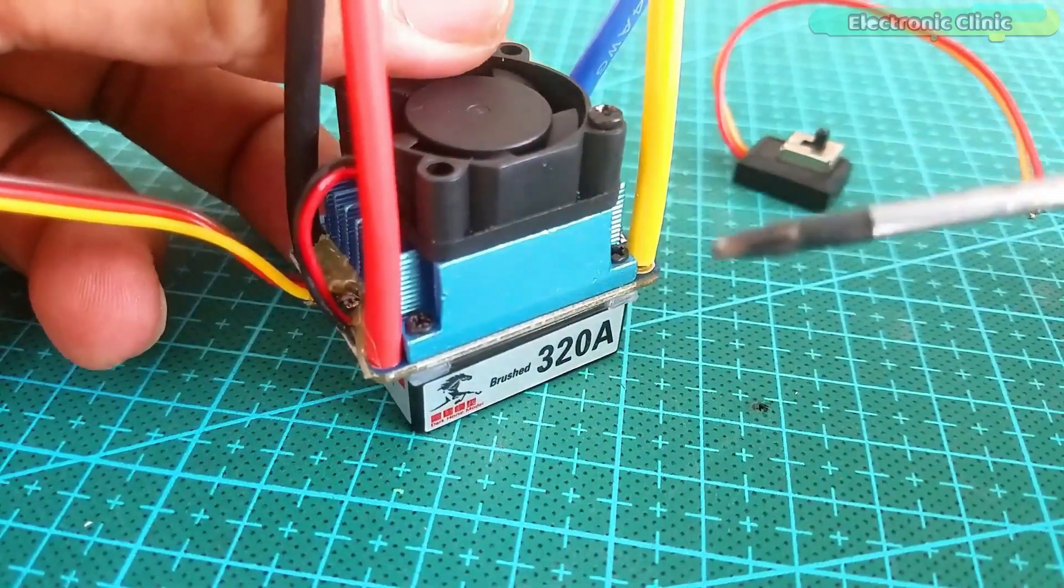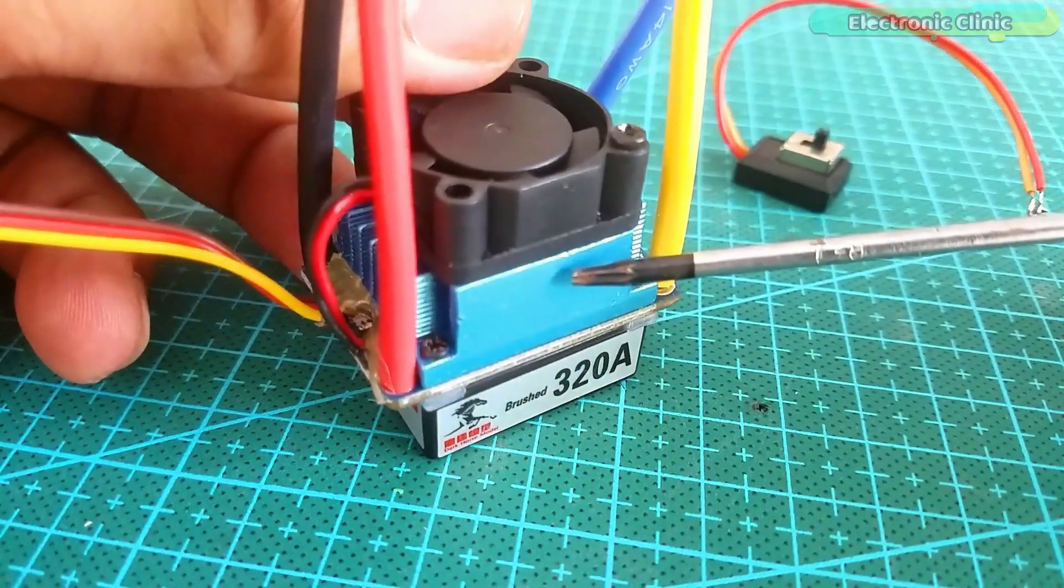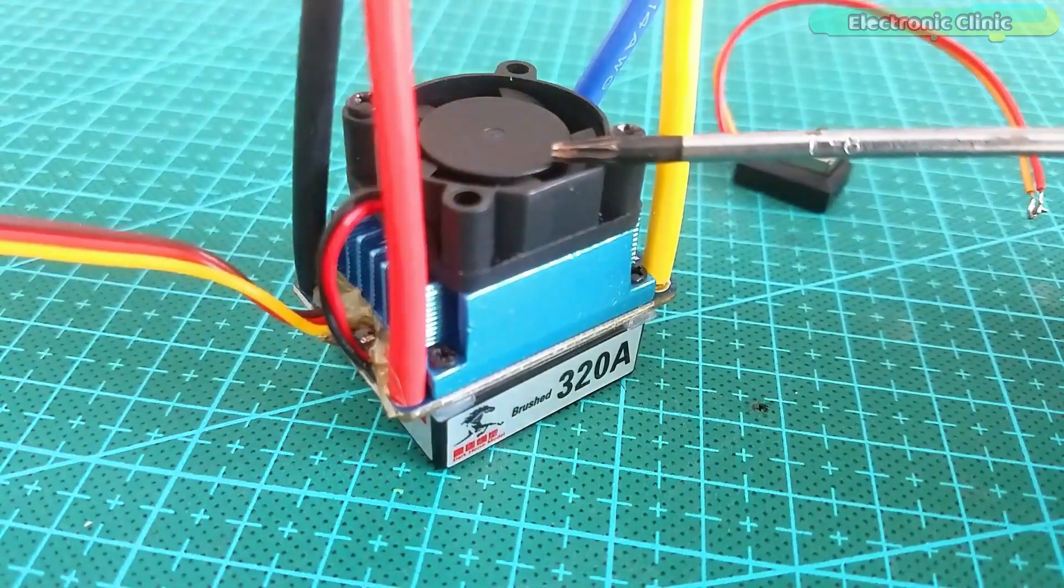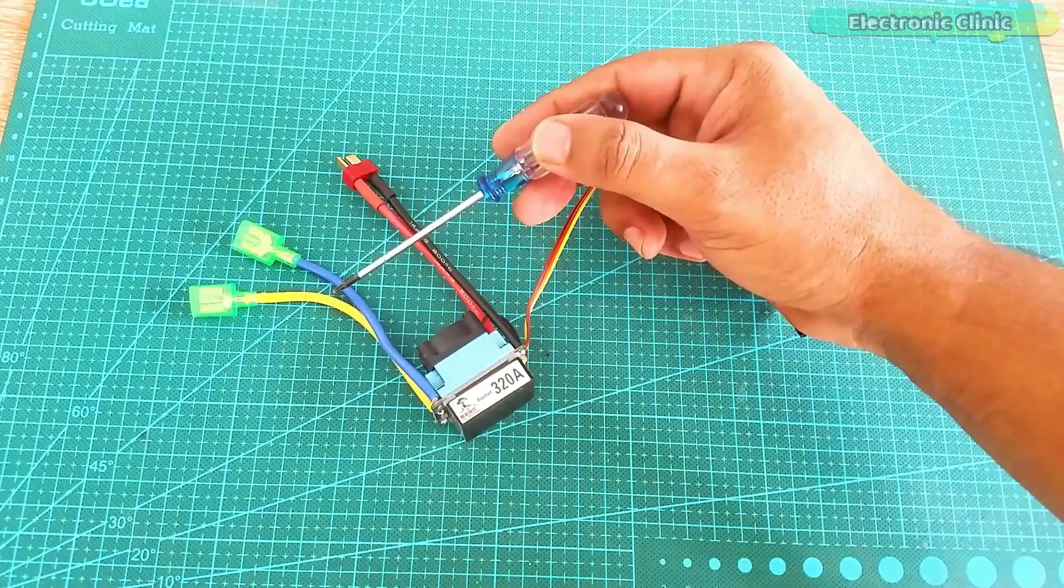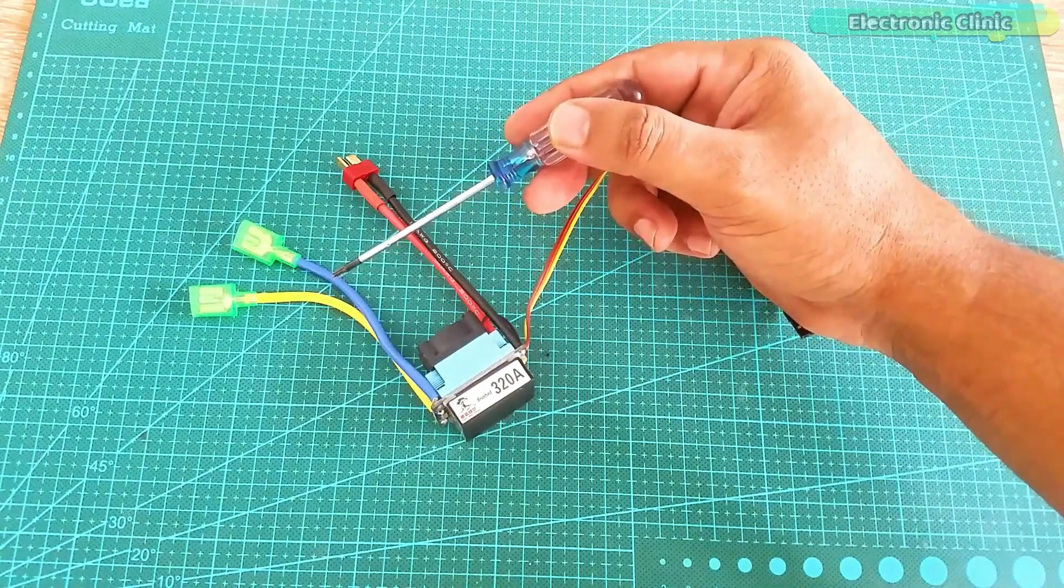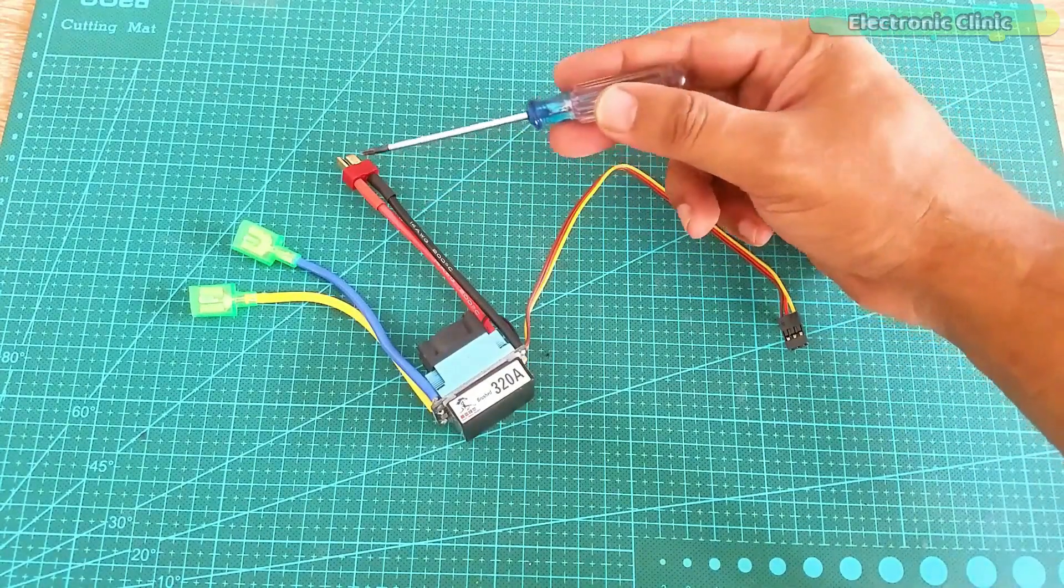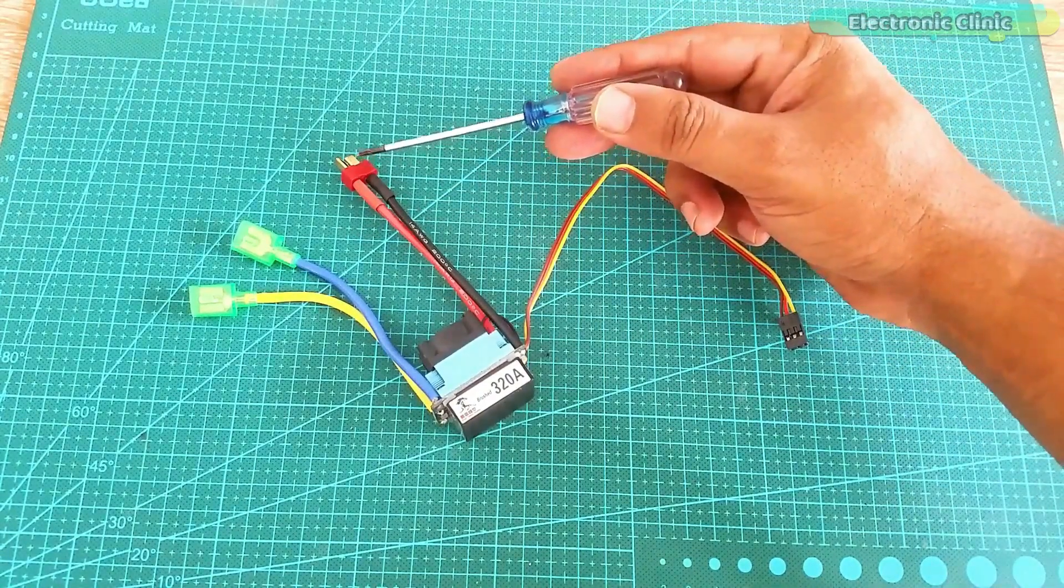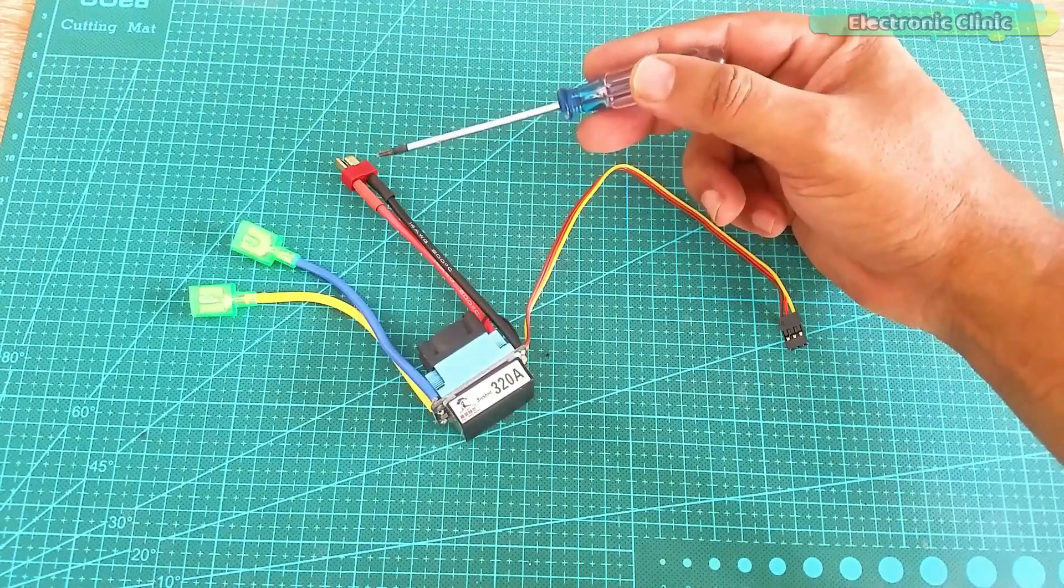On the top you can see this light blue color aluminum heat sink and this small cooling fan. The yellow and blue color wires are the output wires and are connected with the DC motor. The red and black wires with an XT60 type connector are the input voltage wires. With the help of this it can be easily connected with the LiPo batteries.